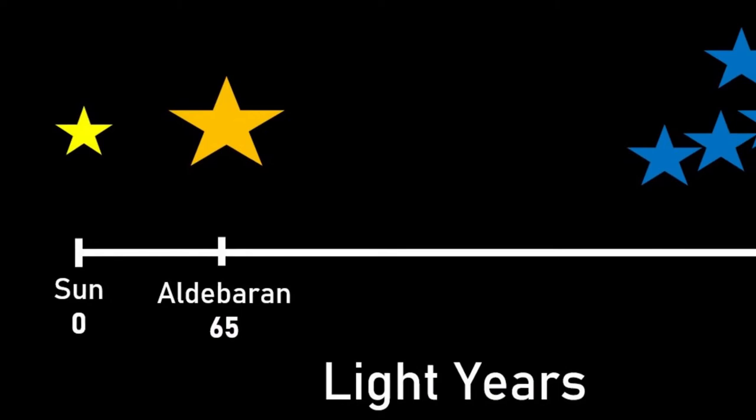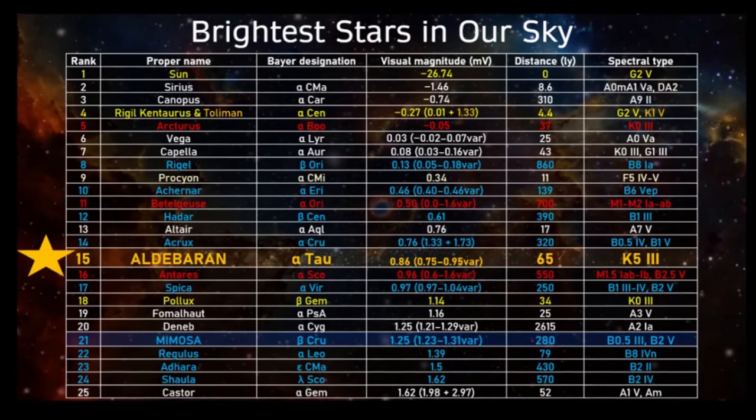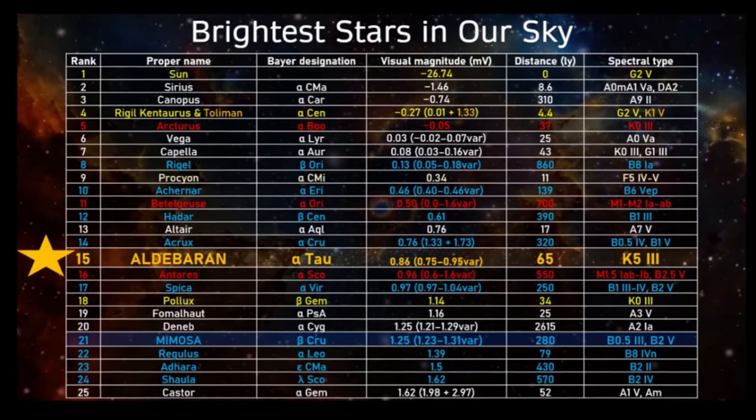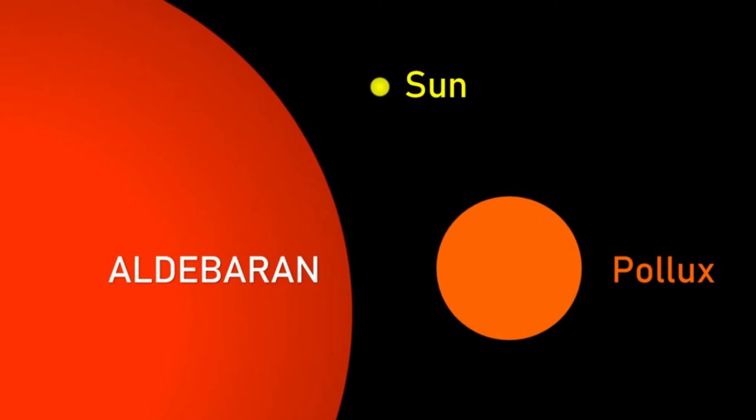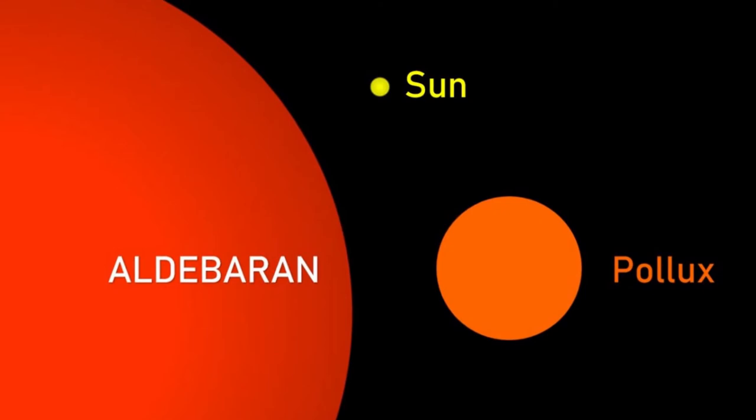Aldebaran varies in brightness but is typically the 14th brightest star in the night sky, and is one of, but not the nearest giant star to the sun. And just like Gemini's Pollux which is actually the closest giant star to us, Aldebaran is substantially cooler than the sun and in many ways represents the future of our beautiful yellow star.